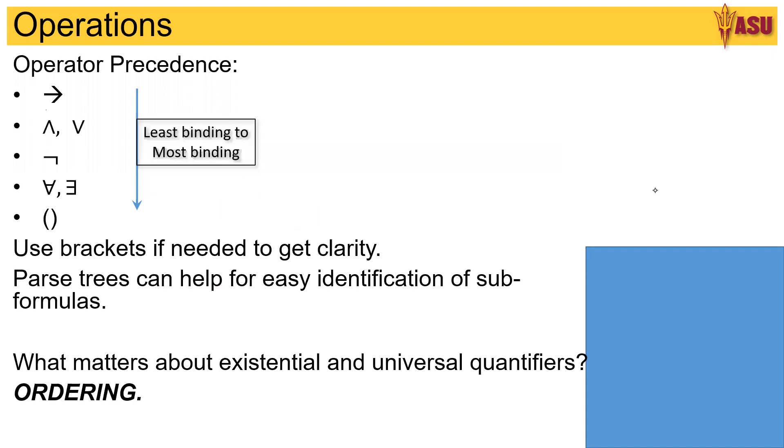So a quick recap. The first thing that we need to remember is the operator precedence. Now that goes exactly same like in predicate logic, except that the binding for universal and existential quantifiers is the highest. Again, I would like to insist that using brackets for clarity is very important and it helps you. And drawing parse trees will help easy identification of subformulas.